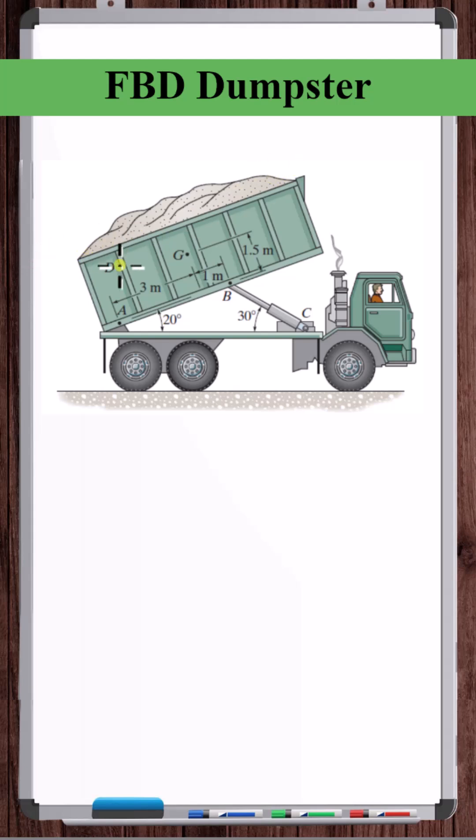Let's draw the free body diagram of this dumpster. So it's tilted up at an angle of 20 degrees. The weight of the dumpster and everything in it, we can put as acting straight down at the center of mass.